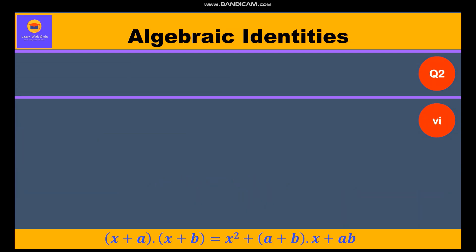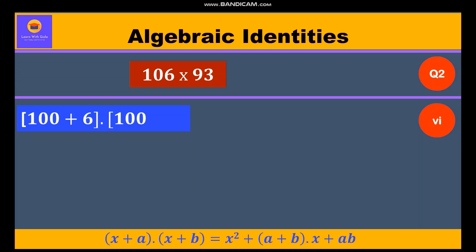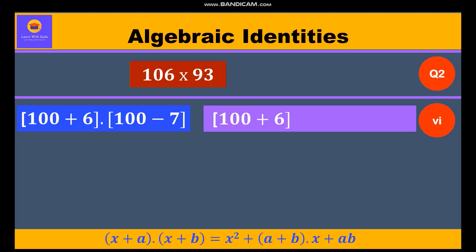Now question 6: 106 into 93. Here, 106 can be written as 100 plus 6 and 93 as 100 minus 7. Taking the minus sign inside, we write 100 plus 6 into 100 plus (minus 7). So x = 100, a = 6, b = minus 7.